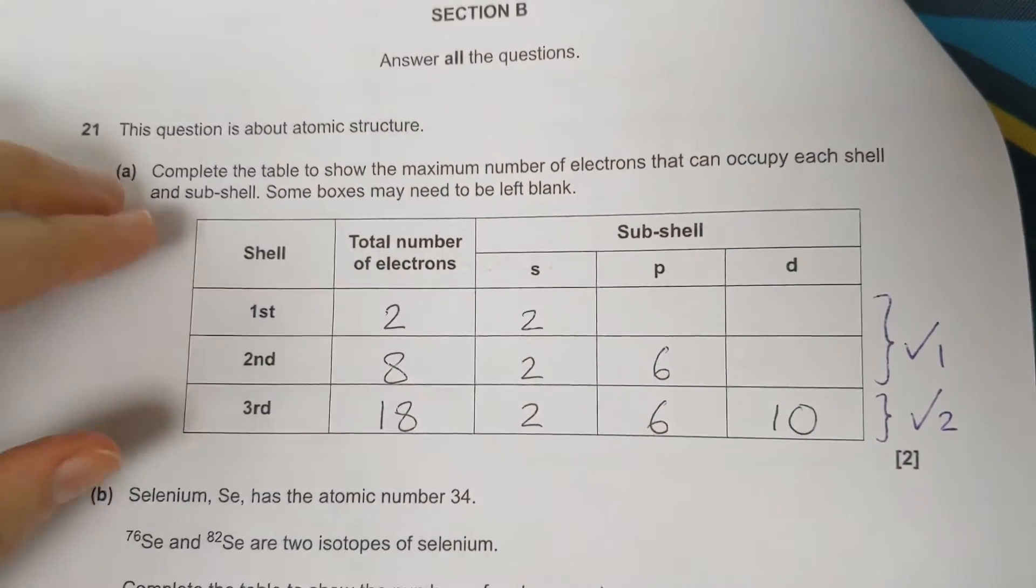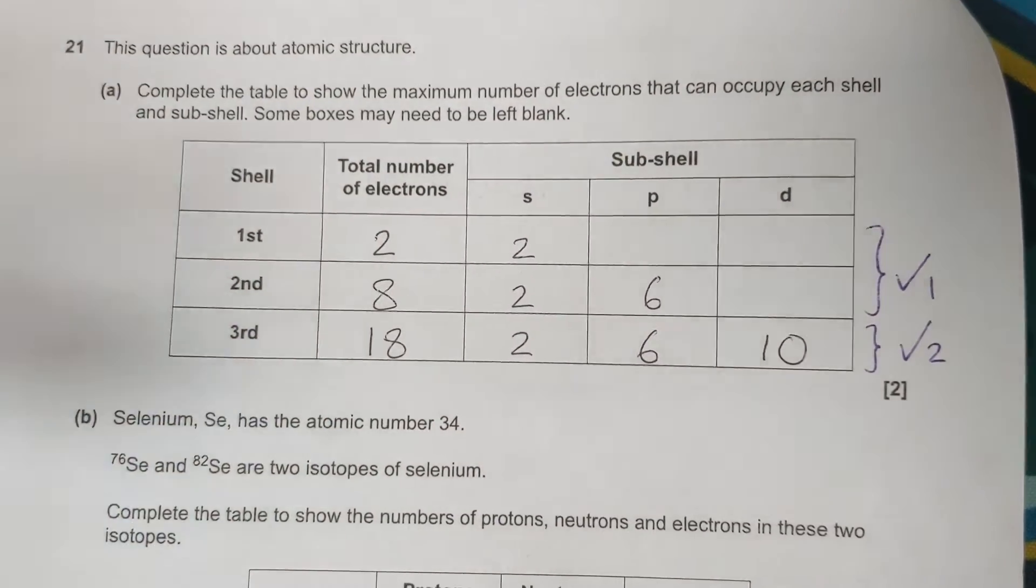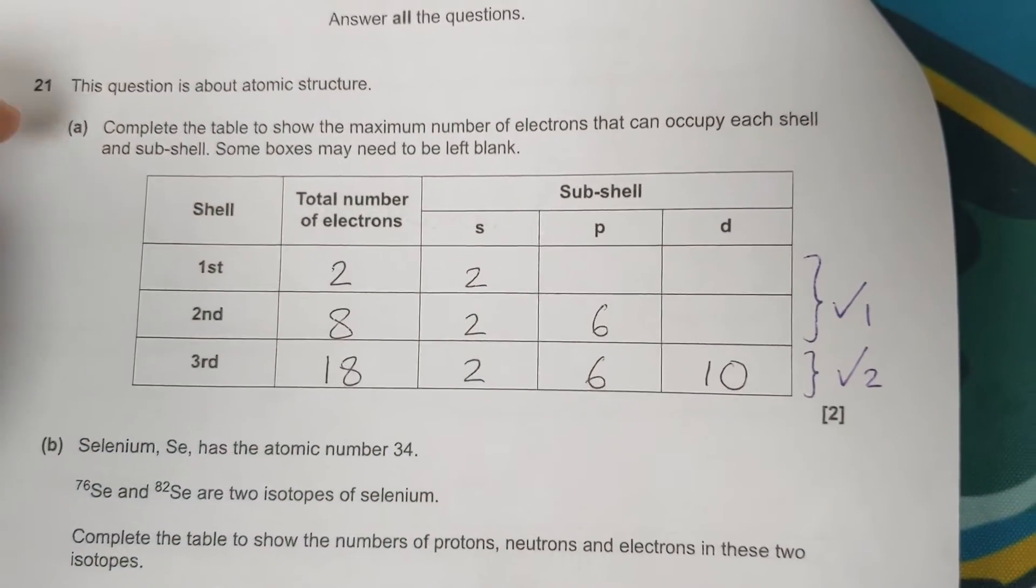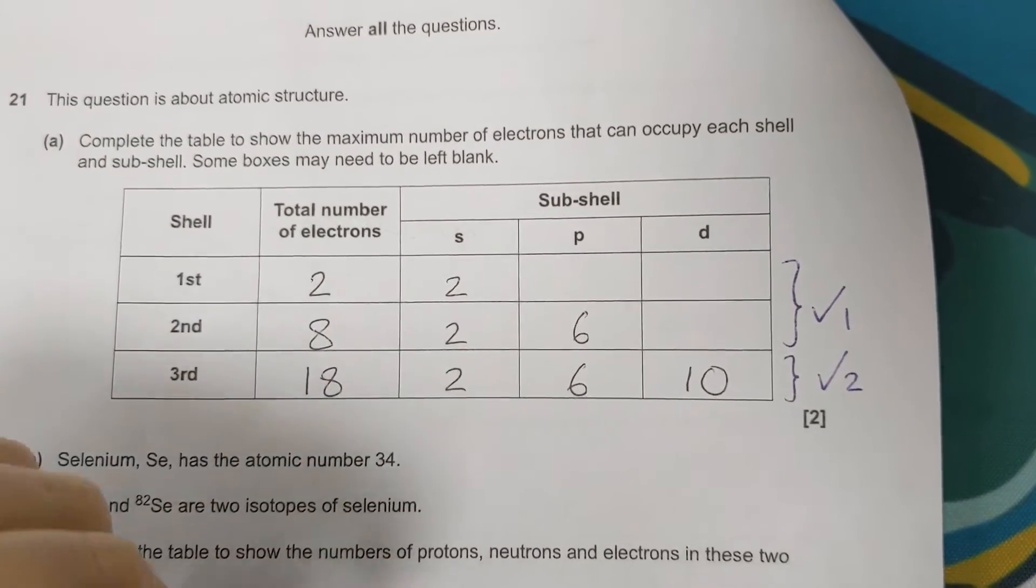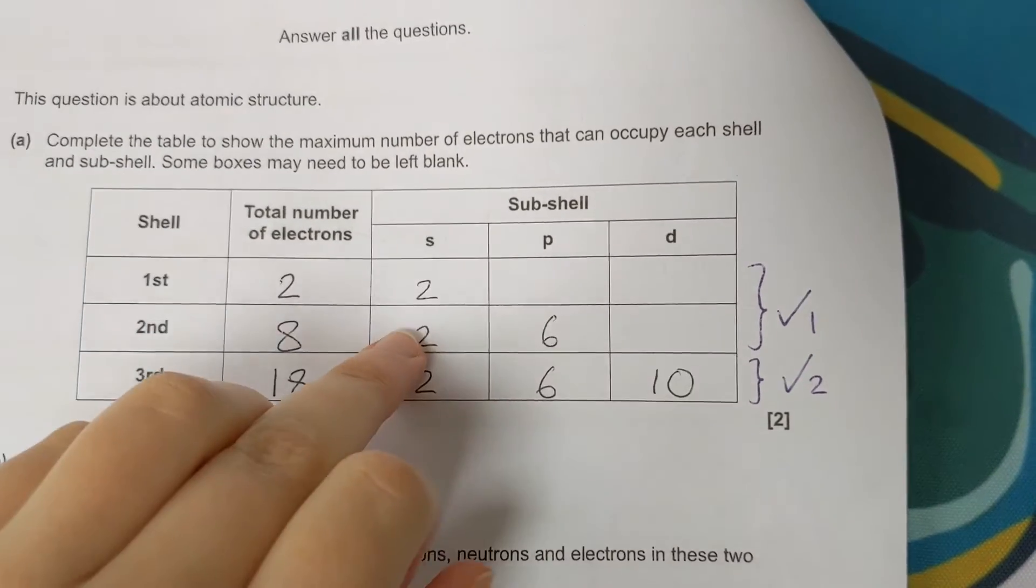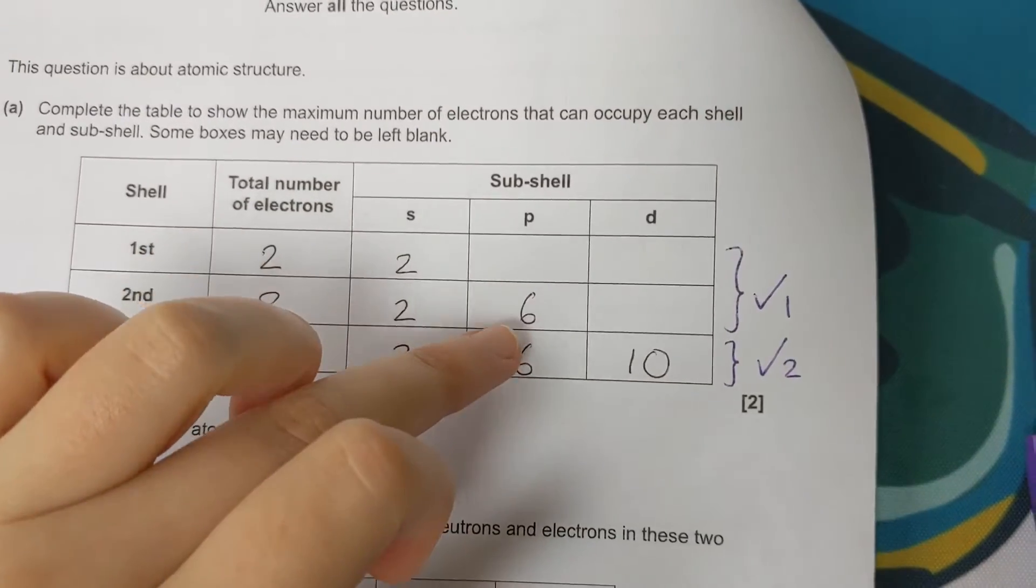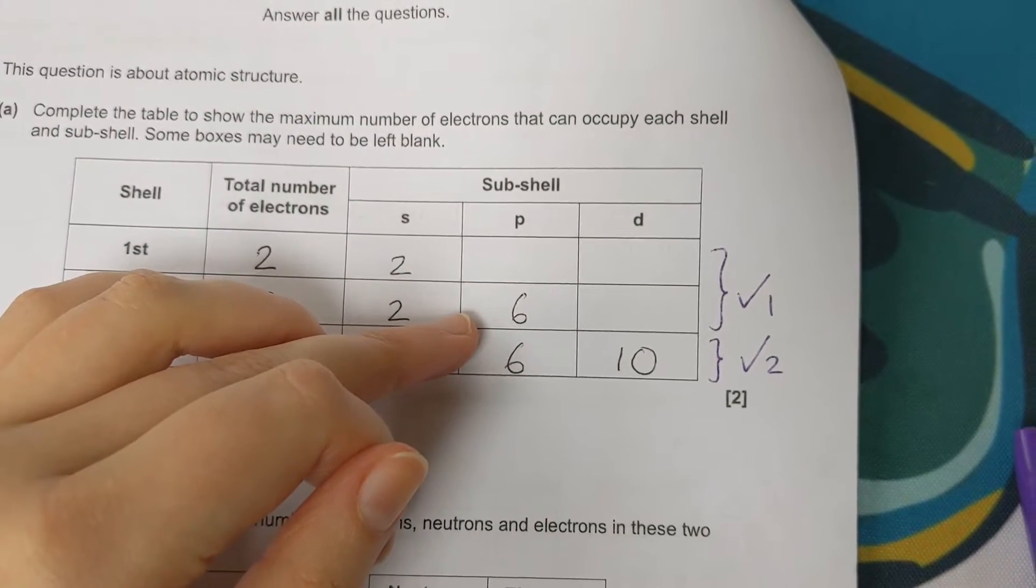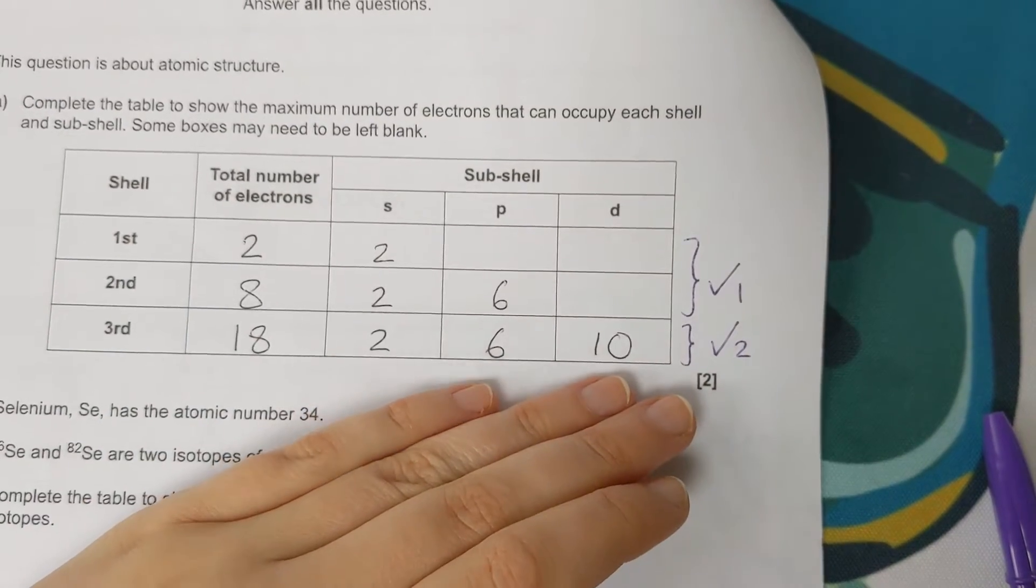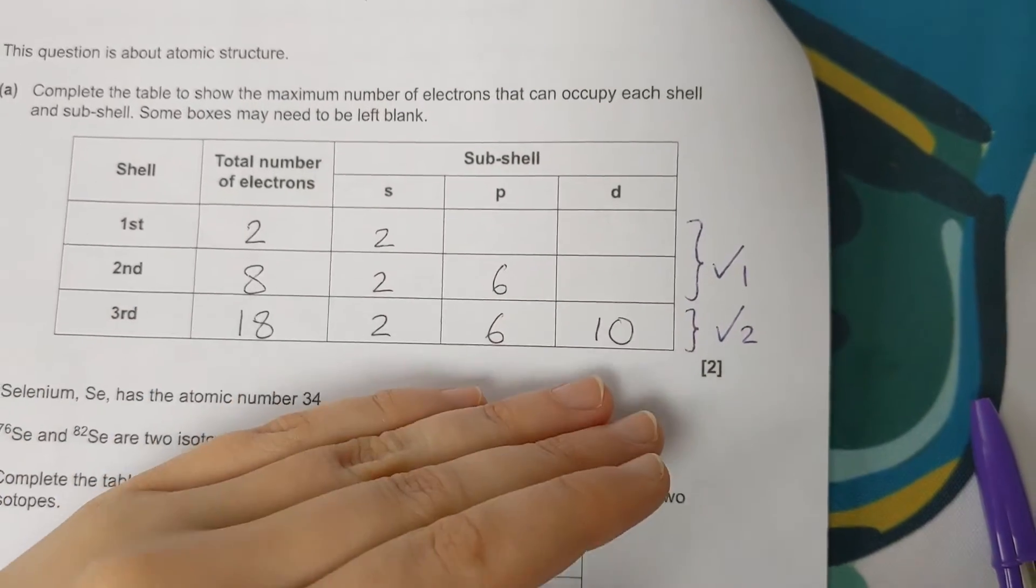Next one's about arrangement of electrons. We have to fill in the total number of electrons in the first three shells. That's 2, 8, 18, and the fourth shell would be 32. Then he wants the maximum number of electrons in each subshell as well. In the first shell, we've only got an S subshell, and there's one orbital in the S subshell, so it can hold two. In the second shell, we've got an S and a P subshell. The S has one orbital, it can hold two. The P subshell has three P orbitals, each of which can hold two electrons, so six altogether. And in the third shell, we get a D subshell as well. That's got five orbitals, each which can hold two electrons, so five times two is 10.